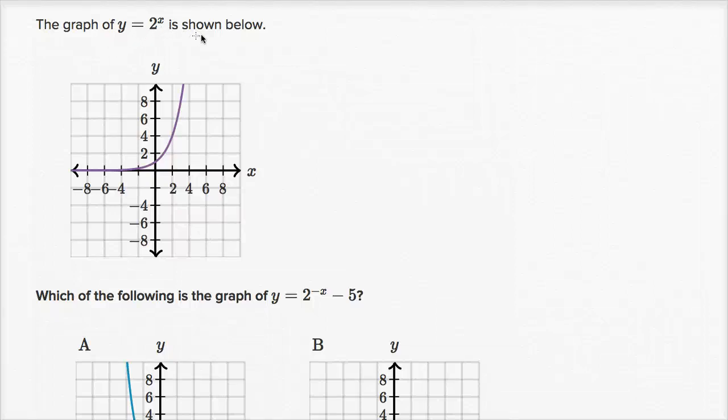We're told the graph of y equals two to the x is shown below. Which of the following is the graph of y equals two to the negative x minus five?